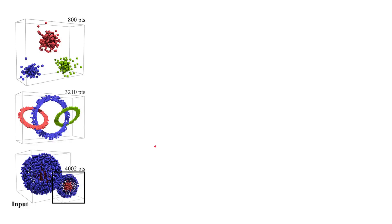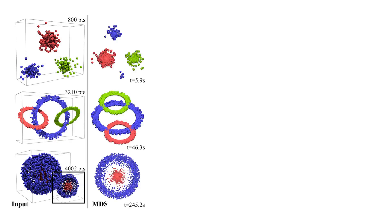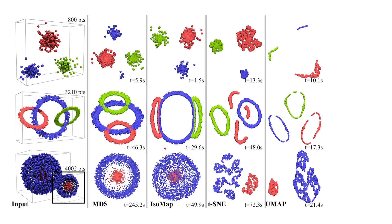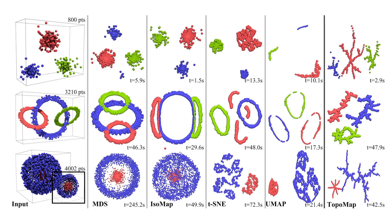Dimensionality reduction is an important tool for the visual exploration of complex high-dimensional data. Most existing techniques focus on preserving the intrinsic geometry of the data during the projection. However, important information can be included within the global structure of the data.